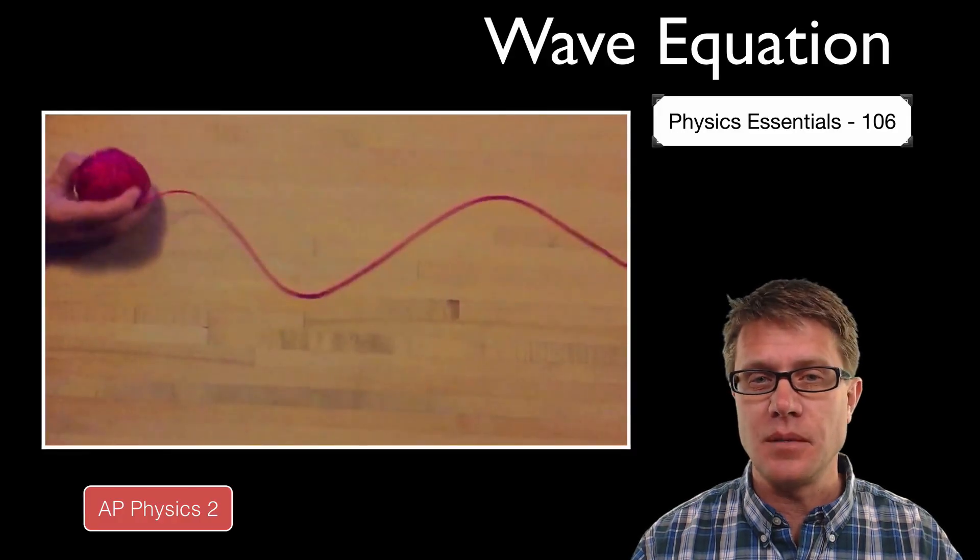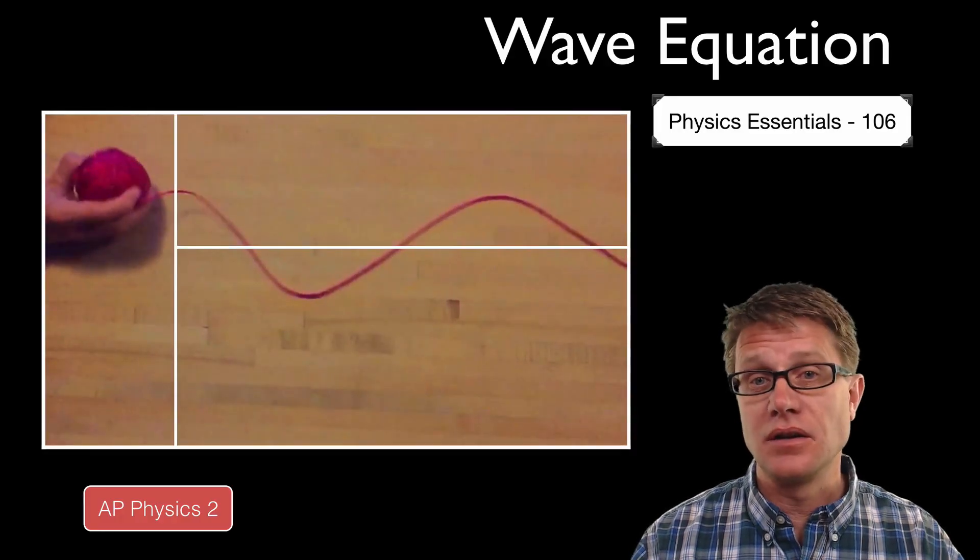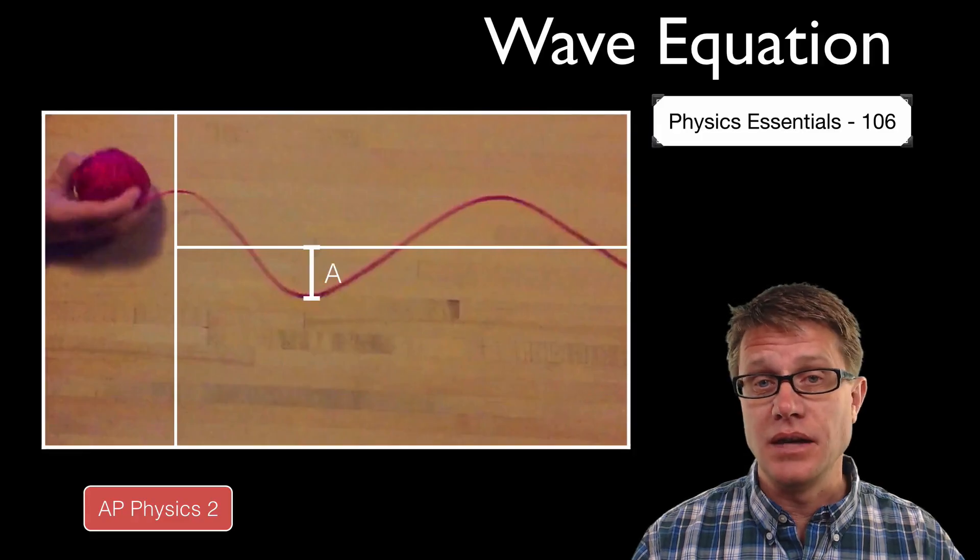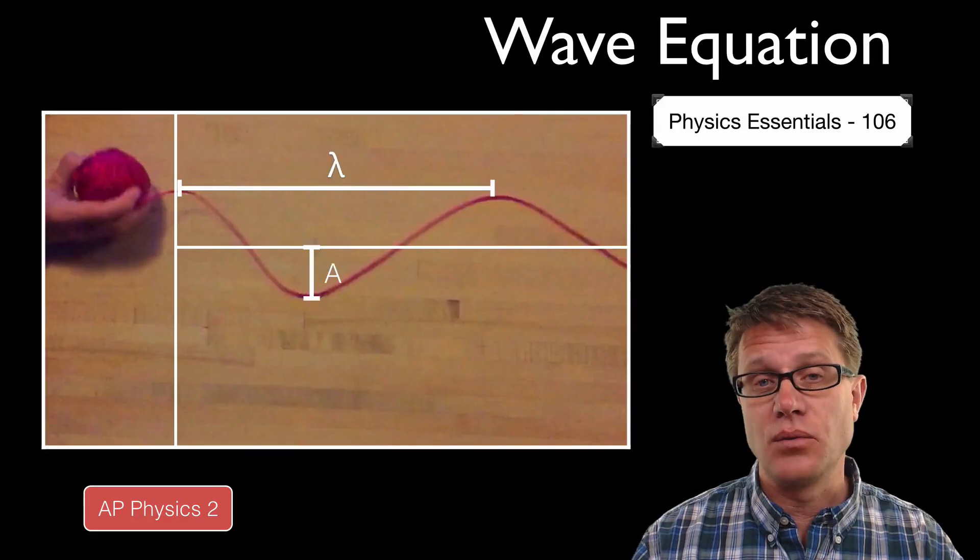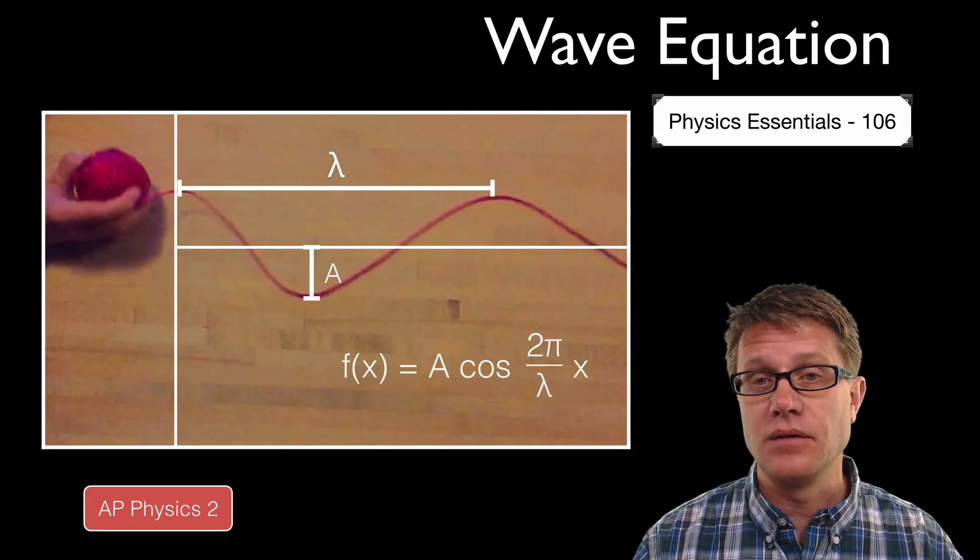But if I slow it down and even stop it, what I have really created is a cosine wave. And so A is the amplitude, lambda is the wavelength, and this is going to be my wave equation.